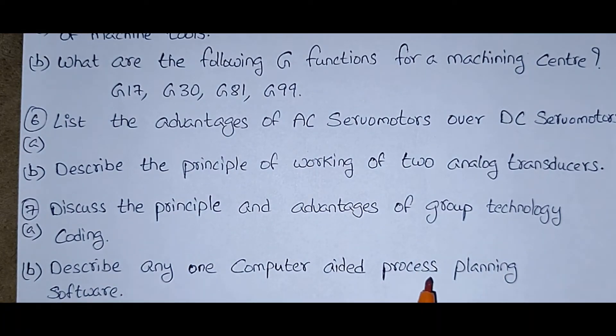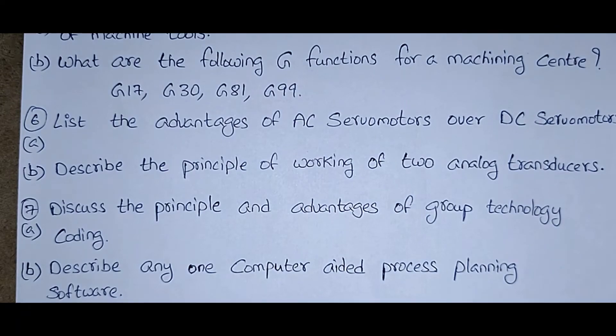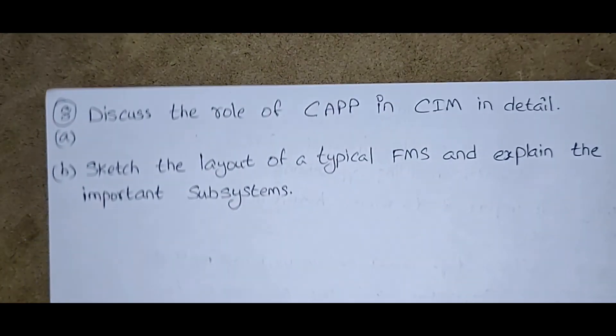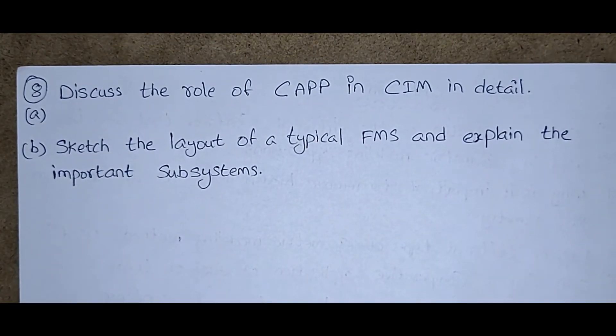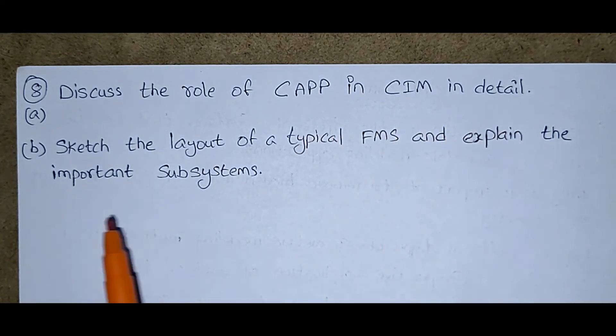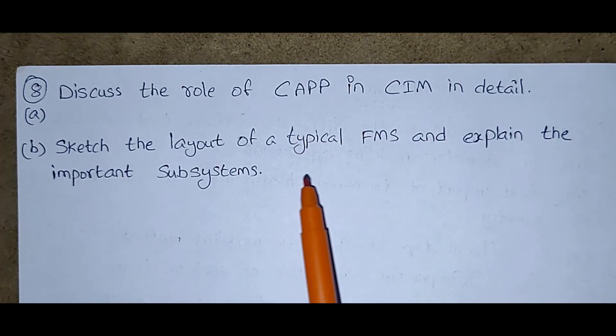So if you see the entire questions, each question is having two bits, right? Last question: discuss the role of CAPP in SIM in detail. B bit is sketch the layout of a typical FMS and explain the important subsystems.